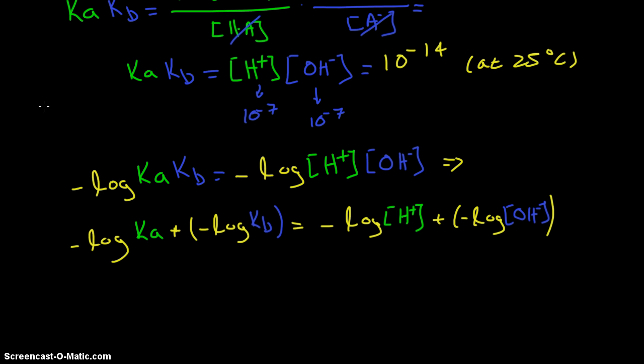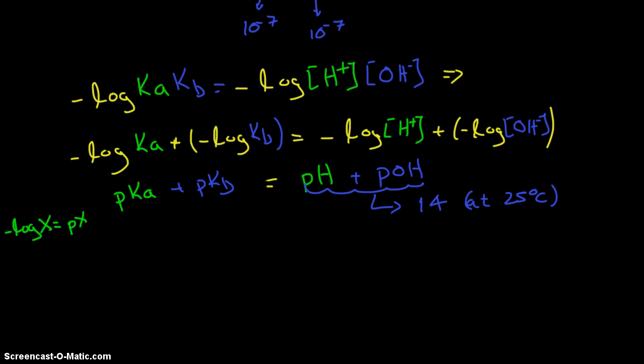What this gives us, this minus log Ka equals to pKa. And you have the quantity, let's say x. If you put a minus log of x, this is equal to px. So, minus log Ka will equal pKa plus pKb. And this will equal the minus log of the hydrogen concentration, it will be pH, plus the pOH. Now, this, we have seen before, this is always 14 at 25 degrees Celsius. So, the expression that we end up with is that pKa plus pKb will always be 14 at 25 degrees Celsius.